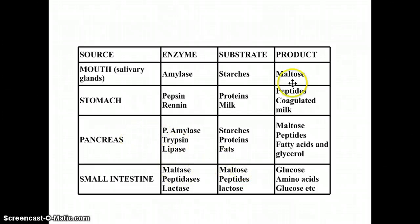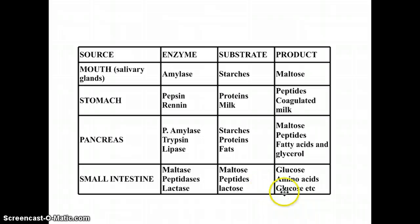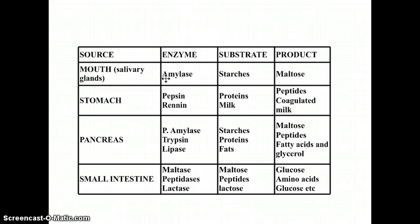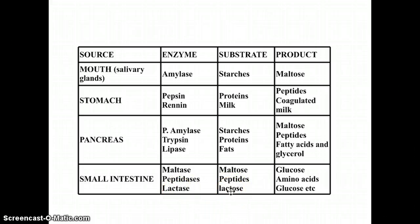Maltase takes maltose — which was already a product of earlier digestion — and breaks it down into glucose. Peptidases take peptides and break them into amino acids. Lactase takes lactose and breaks it down into glucose and galactose. You should be able to interpret the table: for example, which enzyme breaks starches into maltose? Amylase. What enzyme breaks maltose into glucose? Maltase. Lactase is responsible for breaking down lactose, so if you can't break down certain dairy foods, you're lactose intolerant because your lactase enzyme isn't present or isn't functioning correctly. You should be able to use this chart to answer simple questions about the digestive system.